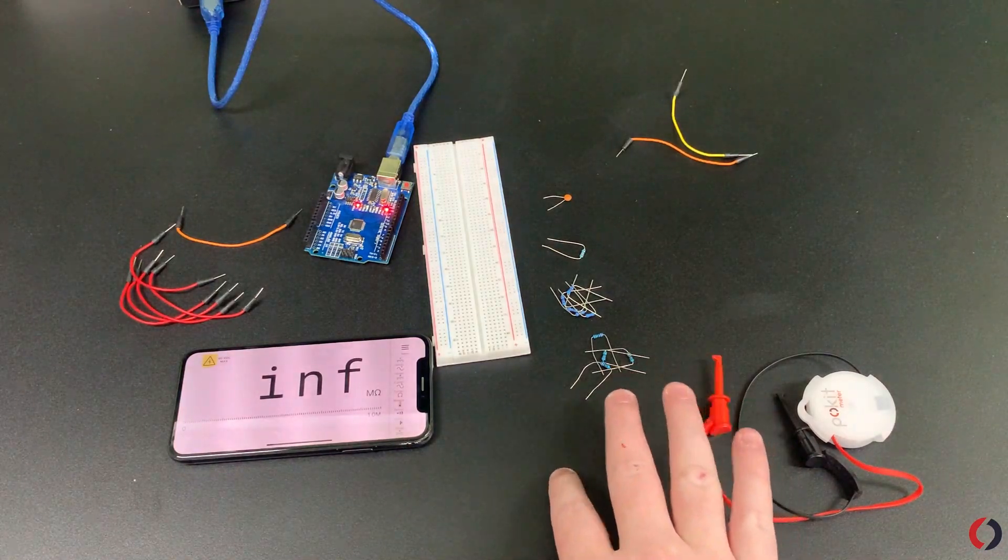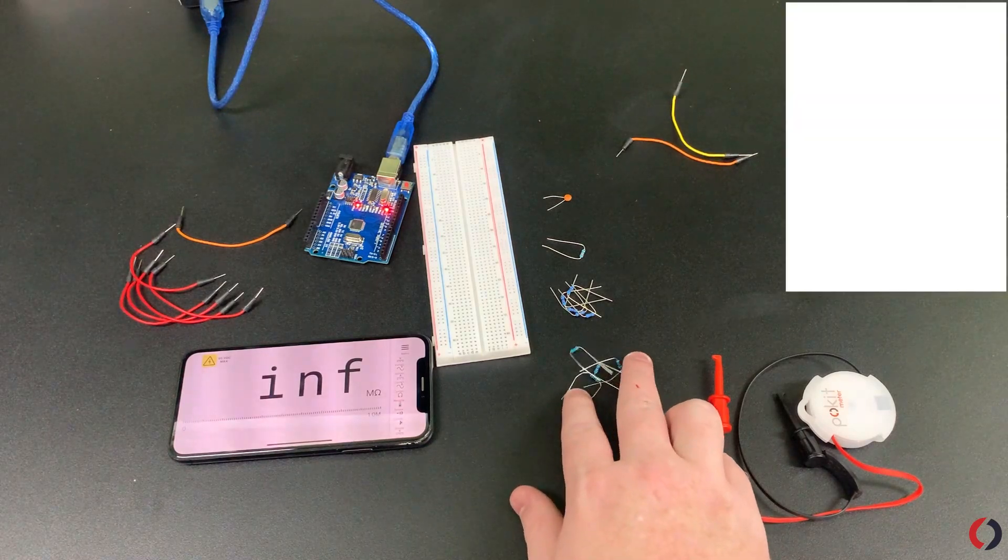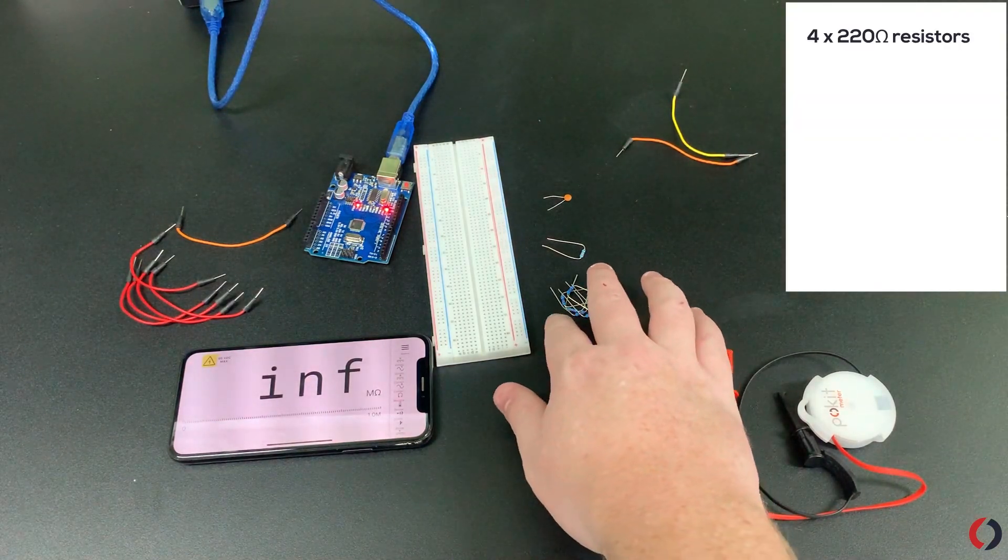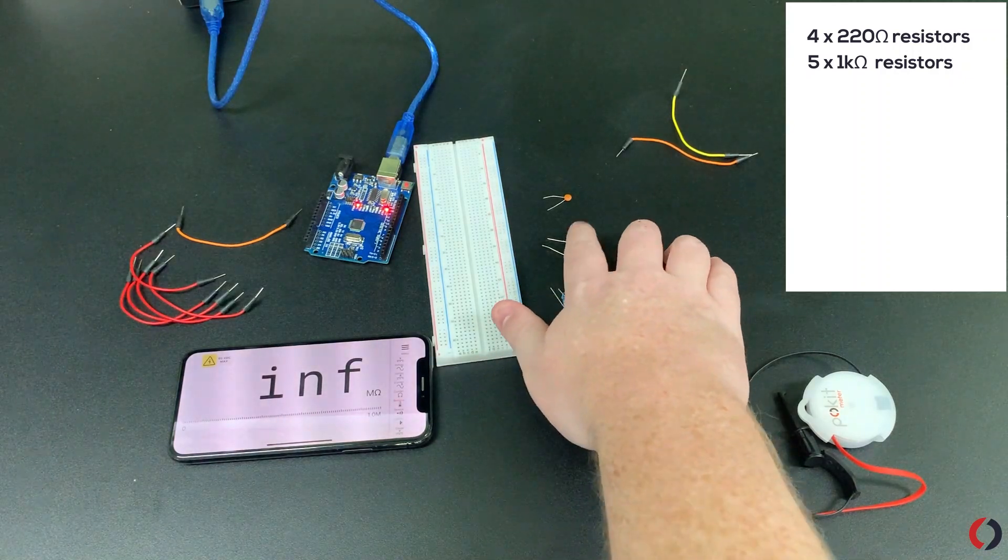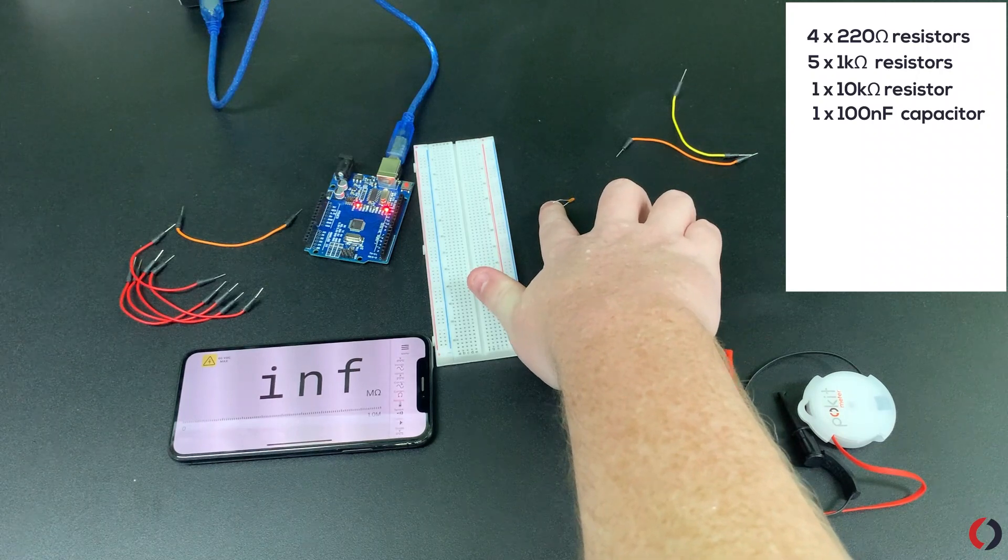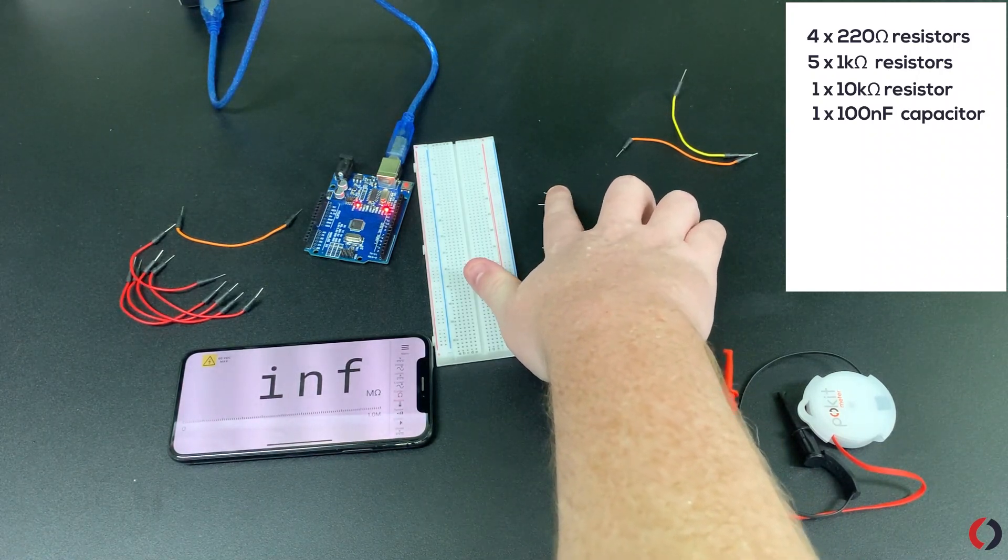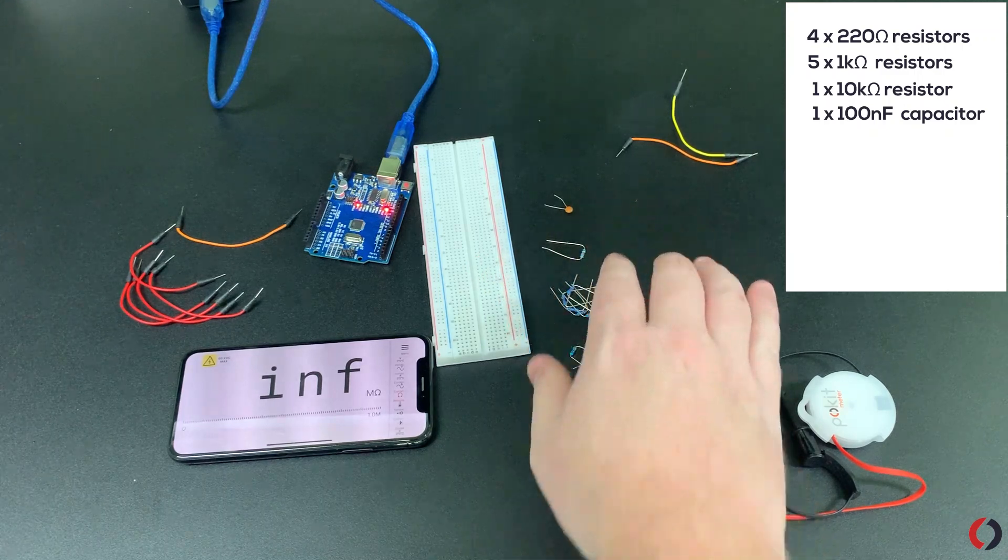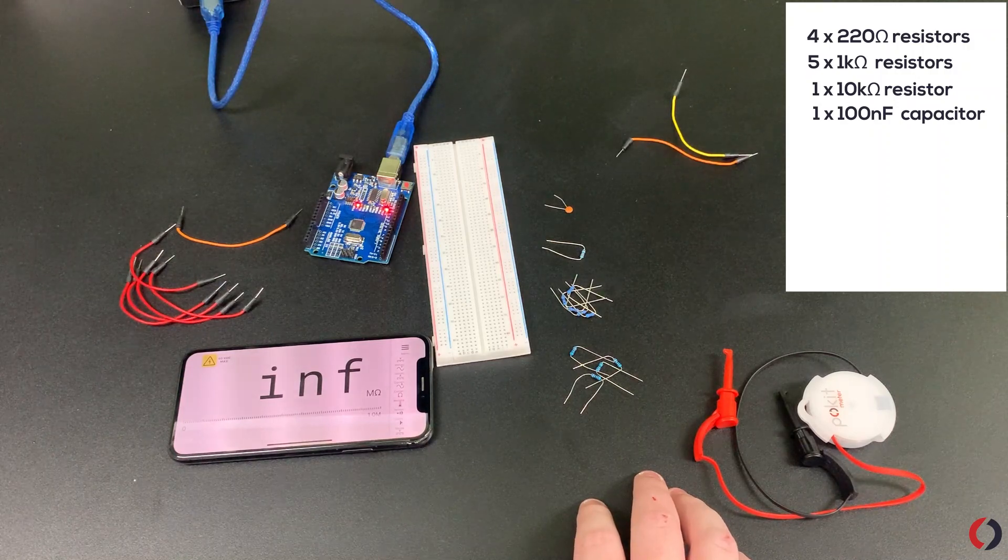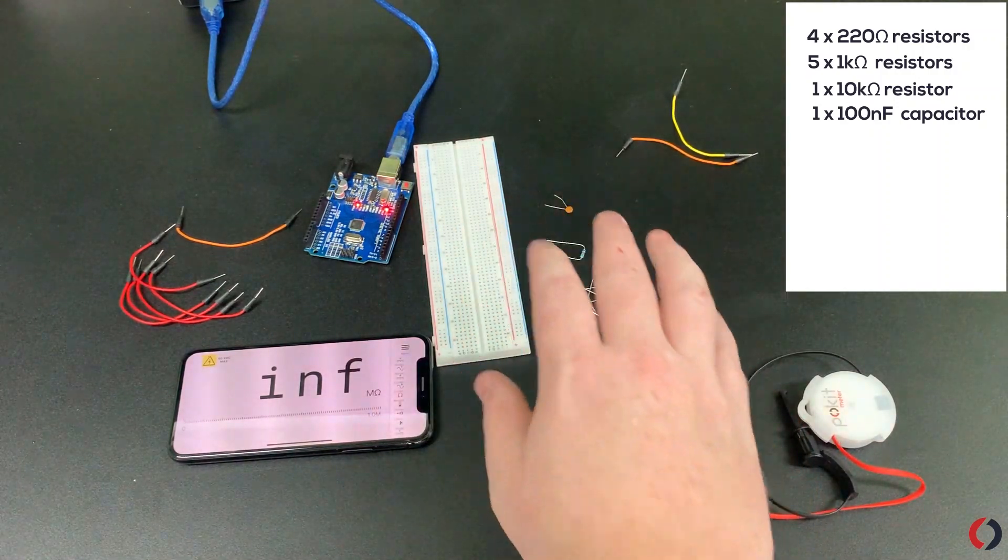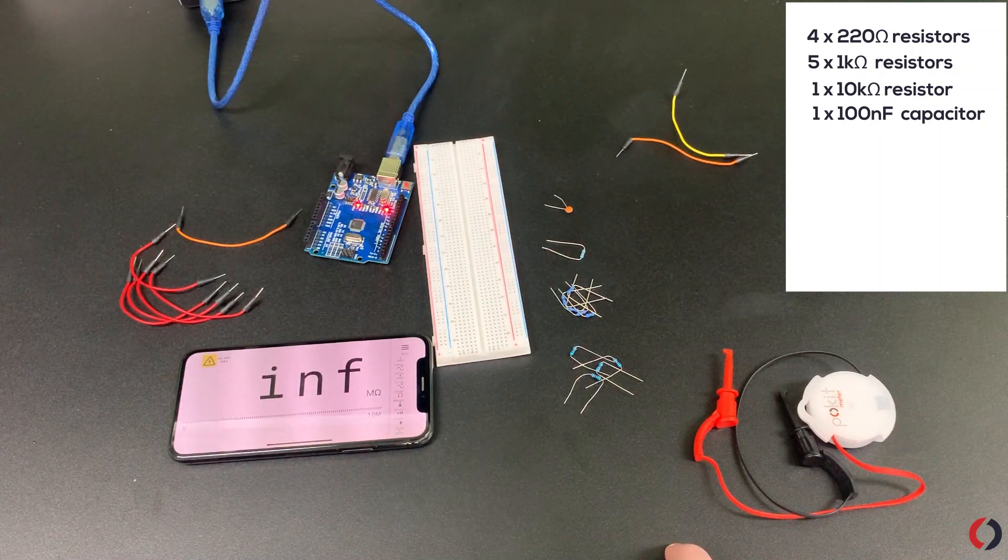So to build this DAC we have four 220 ohm resistors, five 1k ohm resistors, and one 10k resistor. I've also gone to the liberty of getting a 100 nanofarad capacitor which isn't included in our Arduino kit, but the rest of the parts are, because that helps smooth the signal. So if you do have on hand a 100 nanofarad capacitor, that really helps.